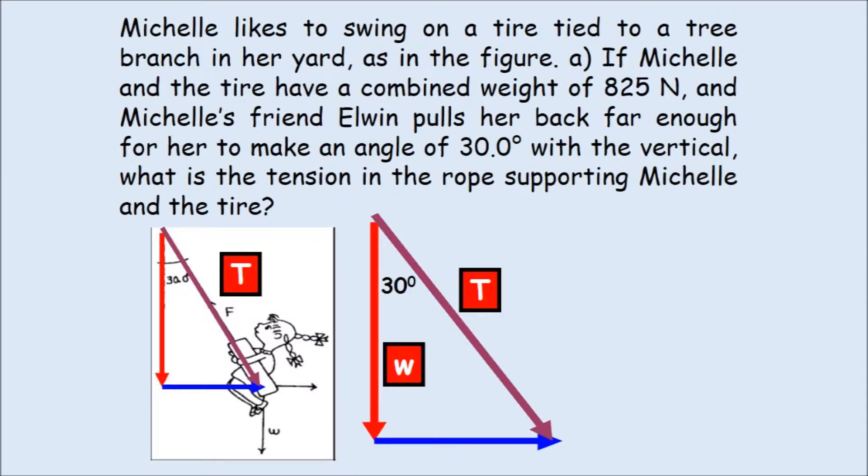So the next one. Michelle likes to swing on a tire tied to a tree branch in her yard, as in the figure. If Michelle and the tire have a combined weight of 823 newtons, and Michelle's friend Elwyn pulls her back far enough for her to make an angle of 30 degrees with the vertical, what is the tension in the rope supporting Michelle and the tire.